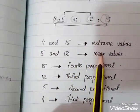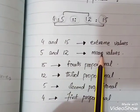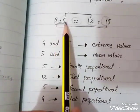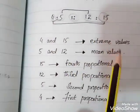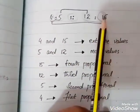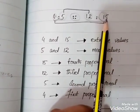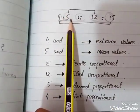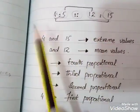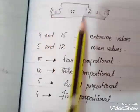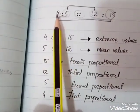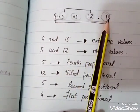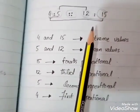What are the mean values? And in a proportion we number each term: this is the first proportion, second proportion, third proportion, and fourth proportion.